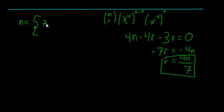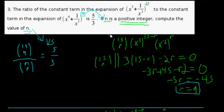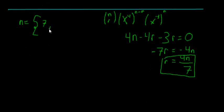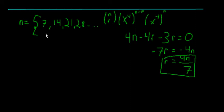So possible values of n: it can equal seven, fourteen, twenty-one, twenty-eight, and so on — but not zero, because zero isn't a positive integer. We've narrowed it down a lot. N could be just about anything before, but now we know it has to be a multiple of seven.